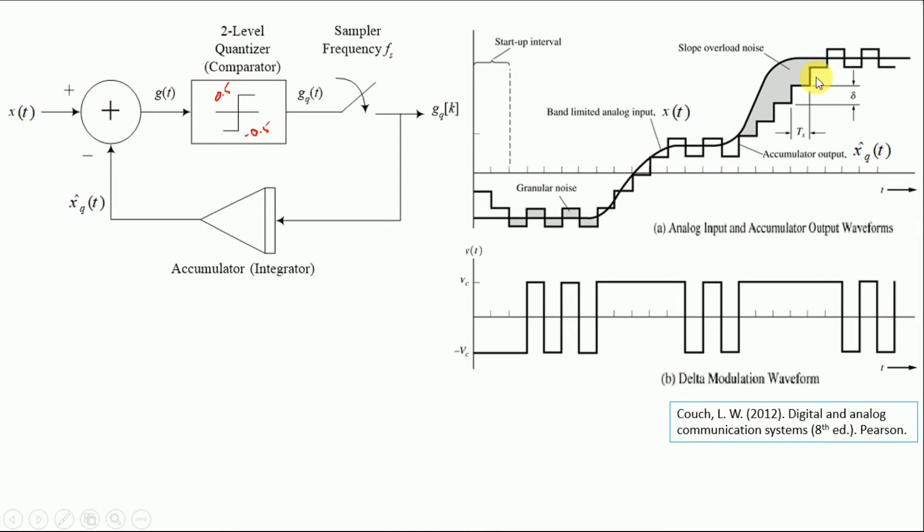So we are going to get rid of slope overload noise, but the toggling will be quite high. So the toggling will be high, but we will be able to capture the slope.